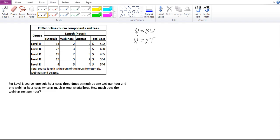I can actually rewrite Q in terms of T. Q is three times W, which would be three times—instead of W I write 2T—so that would be 6T, six times T. Now the total here is given as 690. What you need to work out is the webinar cost per hour.